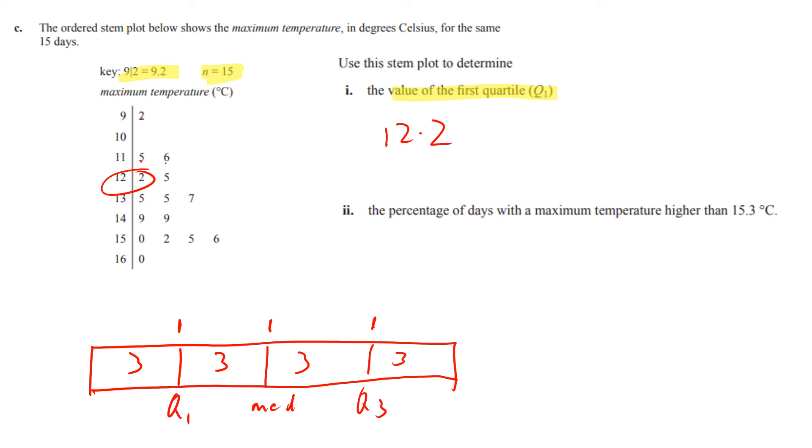And the percentage of days with a maximum temperature higher than 15.3. So 15.3 would be here and so we've got one, two, three days. So that's three out of 15. Some of you might spot that that's exactly the same as one fifth, which some of you should know is 20 percent. So the answer was 20 percent and 85 percent of people got that right. Fairly straightforward.